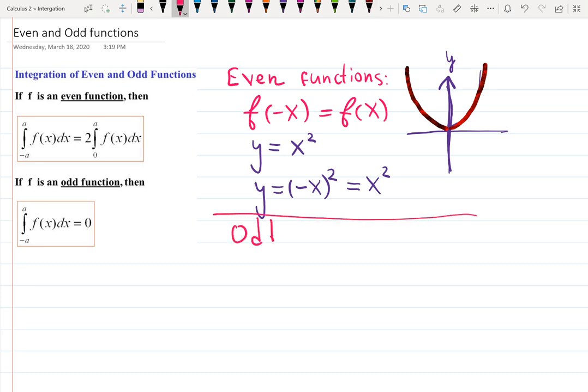Odd functions, on the other hand, guess what they do? If you plug negative x into your function, then it spits it out. So it's going to be negative f of x.